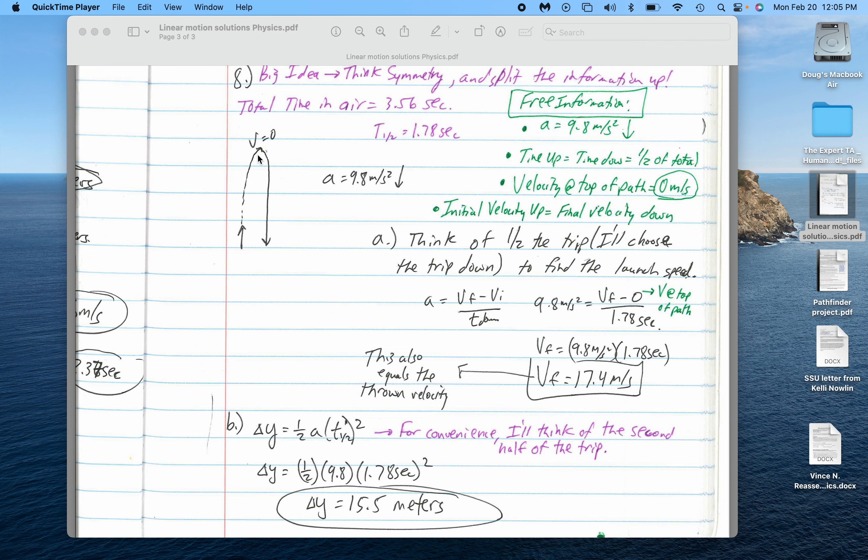That way, I don't have to worry so much about positives and negatives. I'll think of half the trip, and I'm going to choose the second half of the trip. Because since gravity acts down, if I want to think of that as positive, I can think of my initial velocity as 0 and my final velocity is the velocity right before it hits the ground, which would equal the velocity that it's thrown.